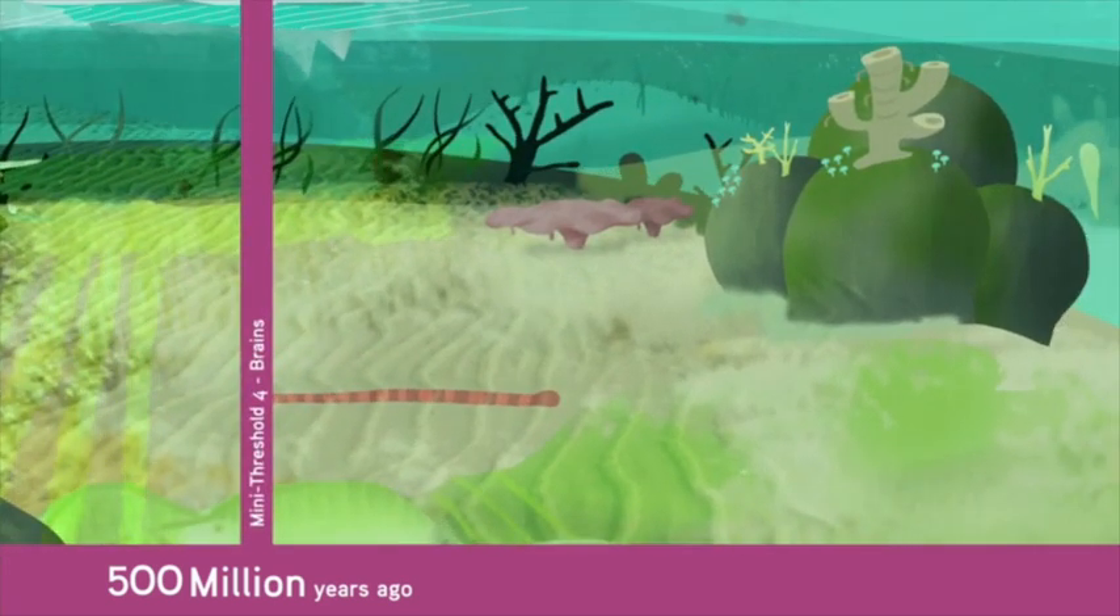The development of brains is mini-threshold 4. Multi-celled organisms needed a way to coordinate all the activities going on inside them, and this became the work of special nerve cells.